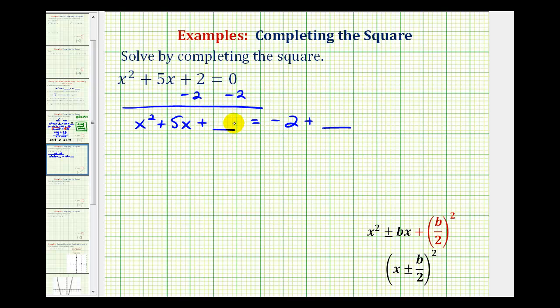The next step is to make the left side a perfect square trinomial. Looking at our notes, if we have a quadratic trinomial with a leading coefficient of 1, the constant term needs to be (b/2)² where b is the coefficient of the middle term. In this example,